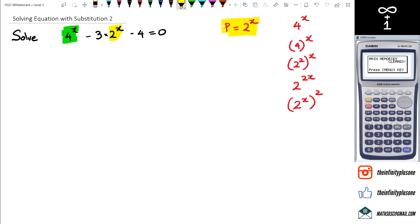And 4^x could be replaced with (2^x)^2, and that's what I'm going to do here. I'm going to replace this as (2^x)^2 - 3·(2^x) - 4 = 0.